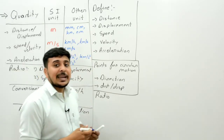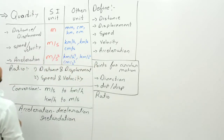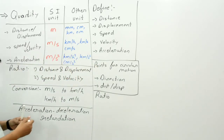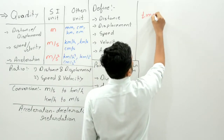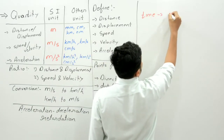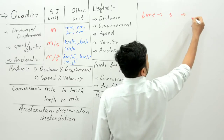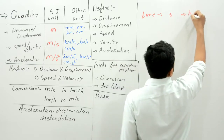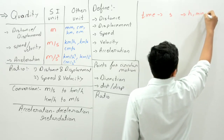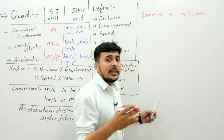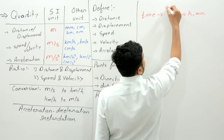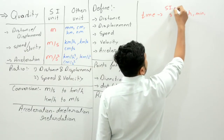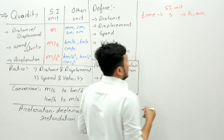Similarly, time is also a quantity here. The SI unit of time is second, and the other units are minute, hour, days, week — anything can be used. But second is the SI unit of time.